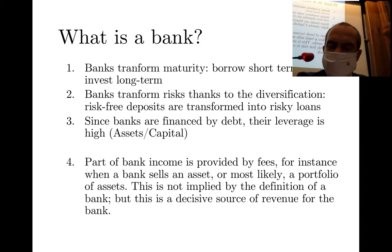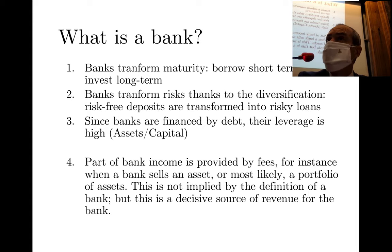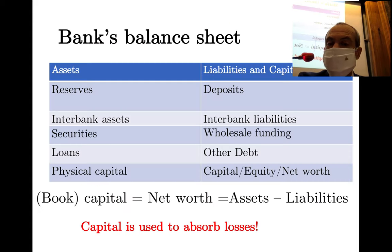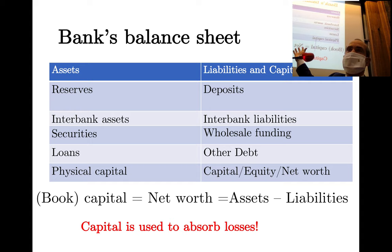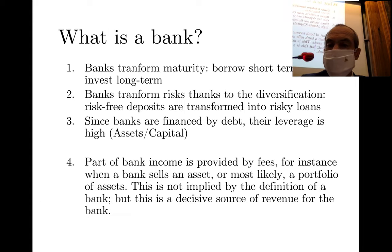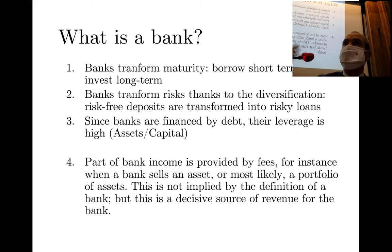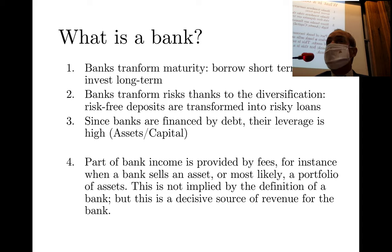The issues identified with the simple balance sheet are still in force on the complex one. Maturity transformation is even more obvious in the complex balance sheet — there's no reason the liability side should match the asset side in maturity. The same applies to risk transformation — there's no reason the liability side should have the same amount of risk as the asset side.